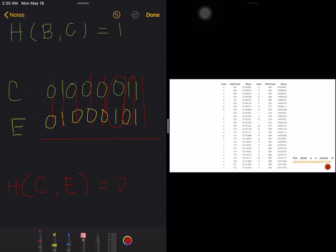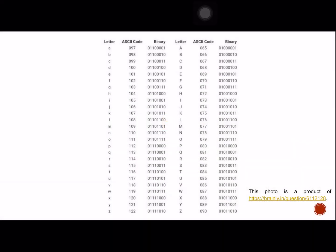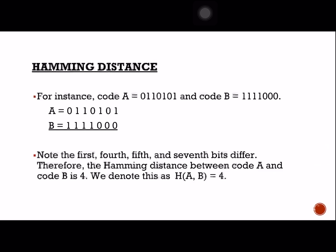Easy — you just have to count the number of differences in the corresponding bits. As another example: checking the Hamming distance between A and B, note that the first, fourth, fifth, and seventh bits differ, which is why the Hamming distance of letters A and B is four.